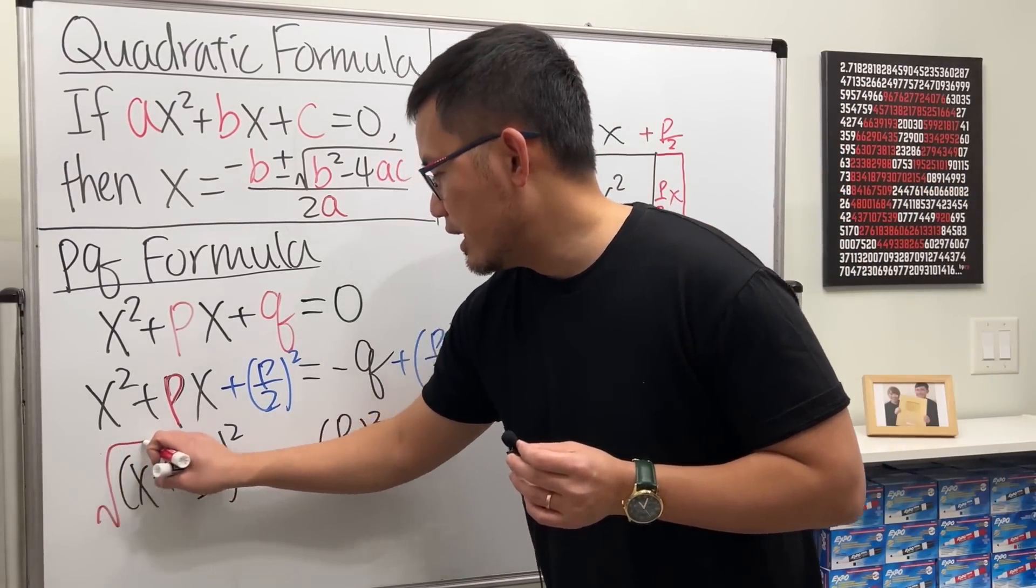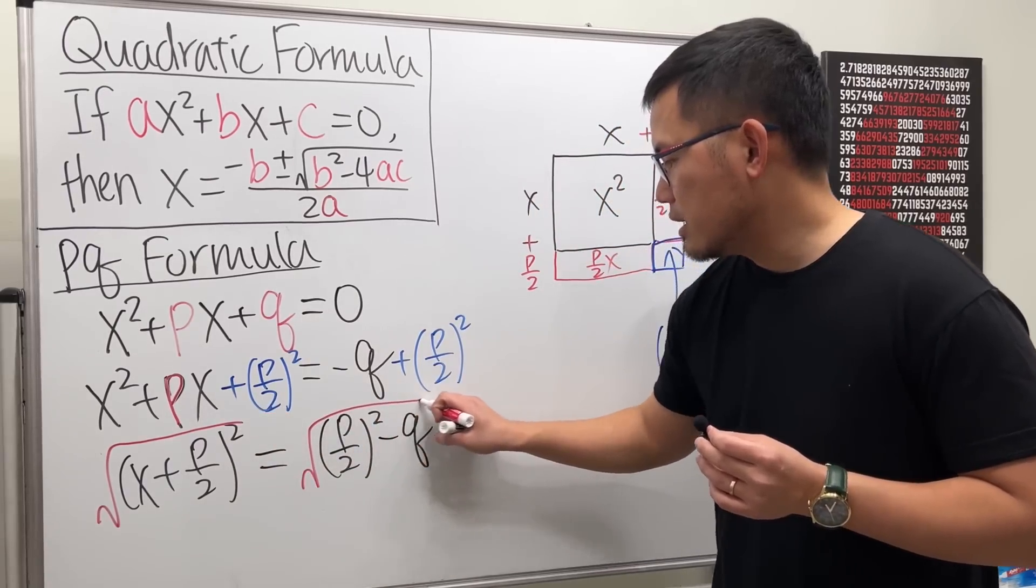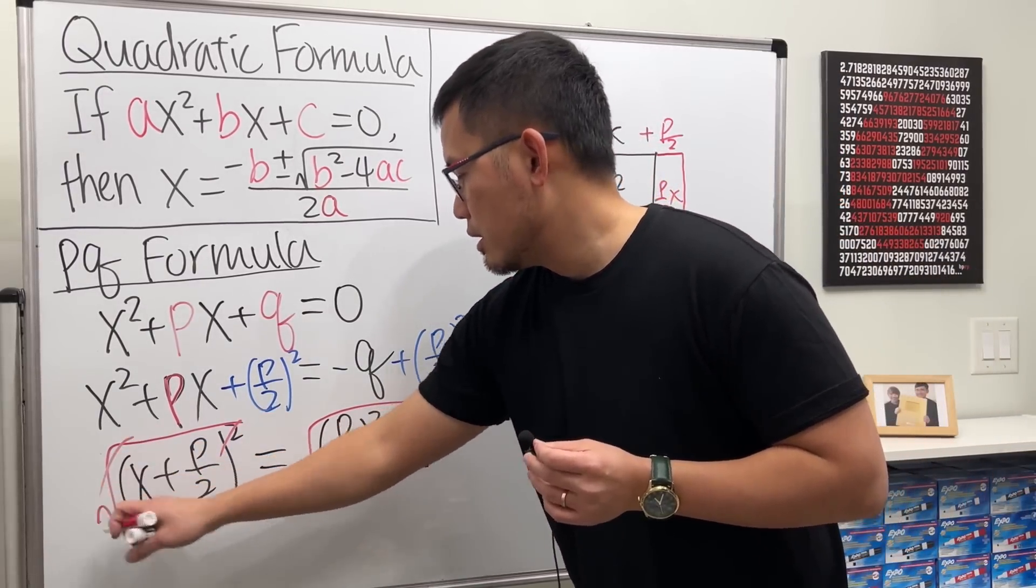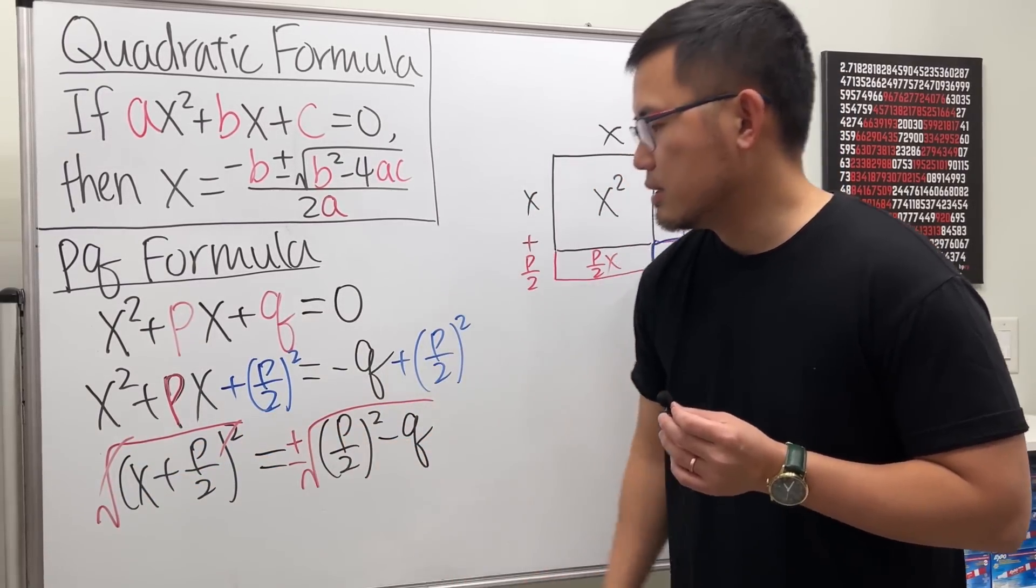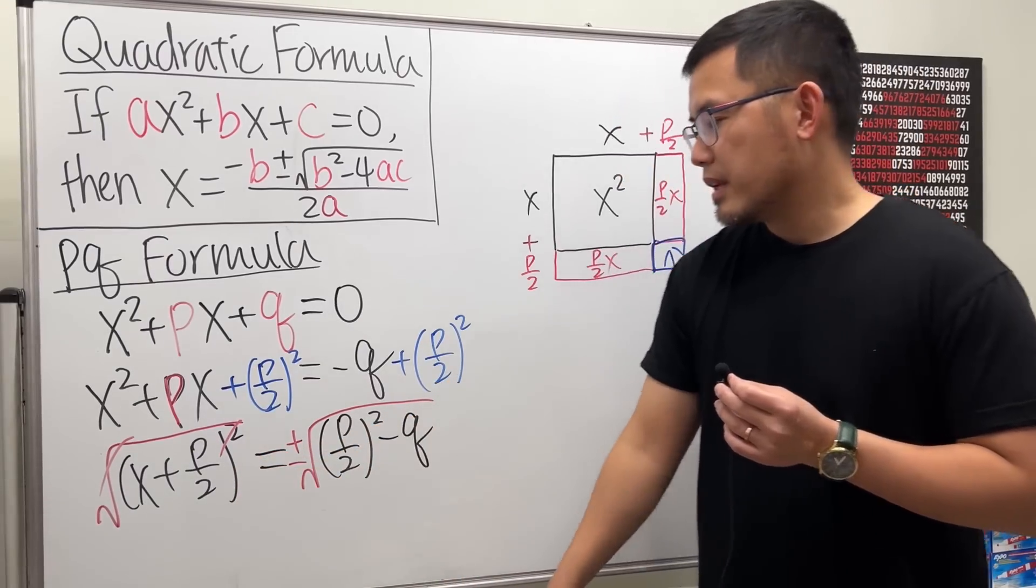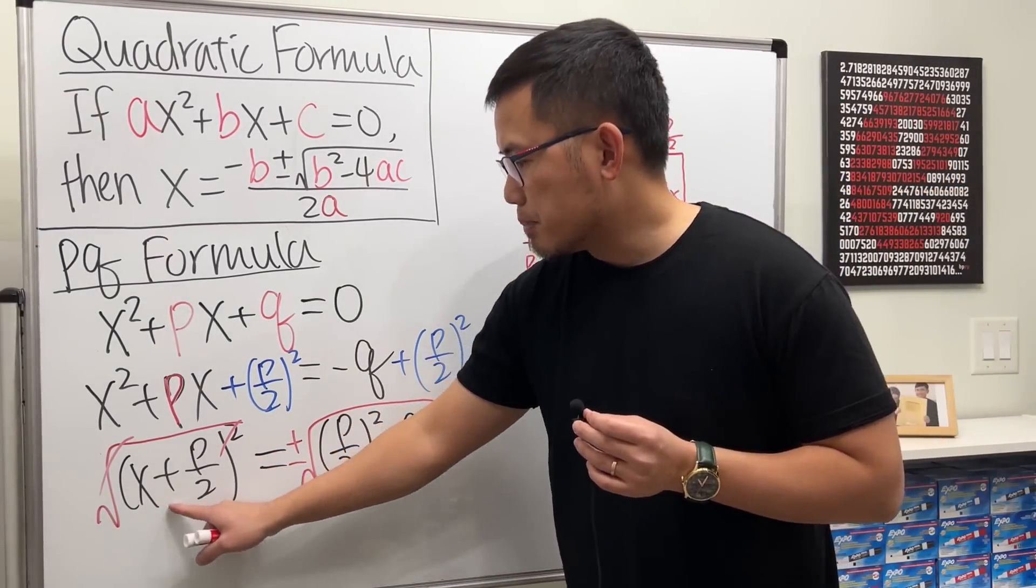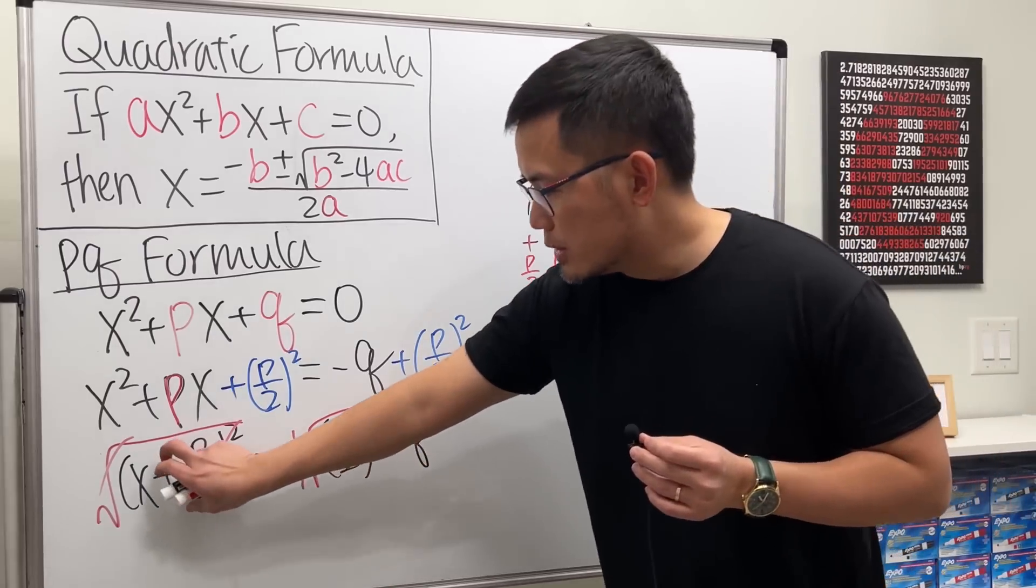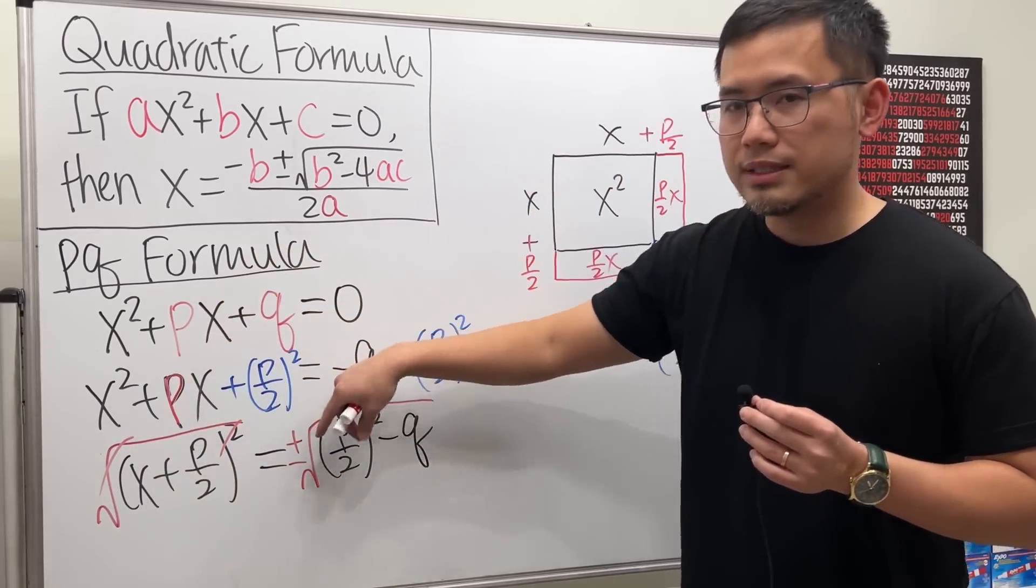Then, we can just take the square roots on both sides. And remember, to put a plus or minus. We have two solutions for the x. And then finally, we have x plus P over 2 equals this. We can just bring the P over 2 to the right-hand side.